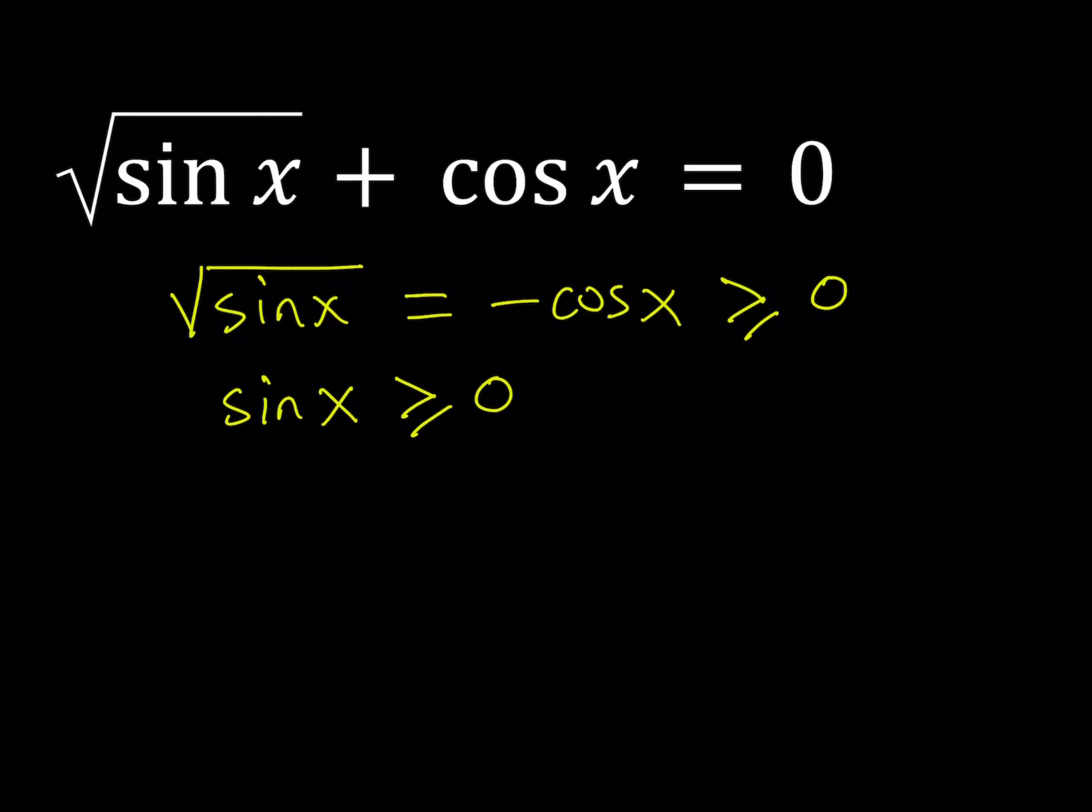Negative cosine x must be non-negative or greater or equal to 0. That just means that cosine x needs to be less than or equal to 0. Sine x needs to be positive or 0, cosine x needs to be negative or 0.